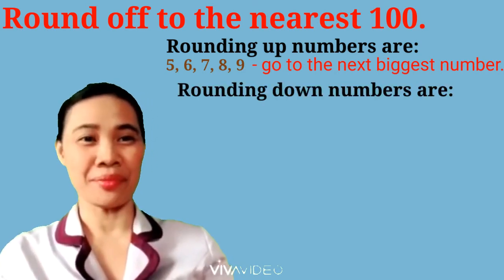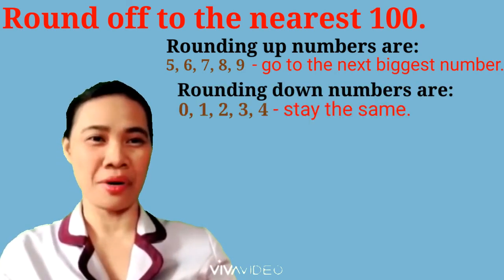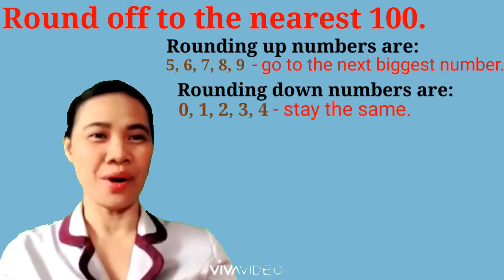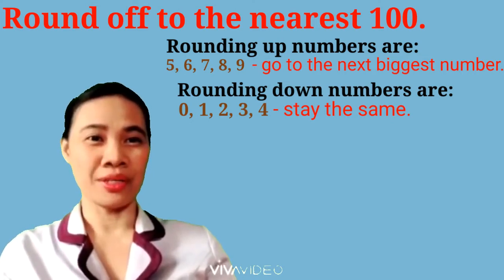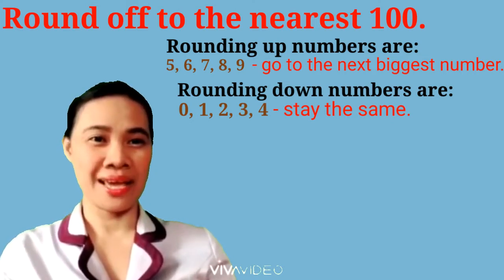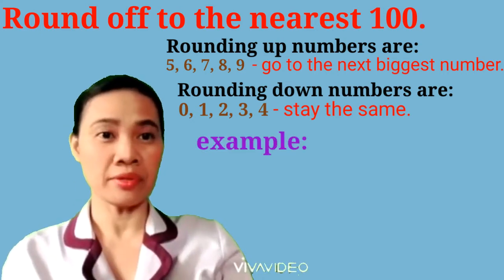Rounding down numbers are 0, 1, 2, 3, and 4. It means stay the same.